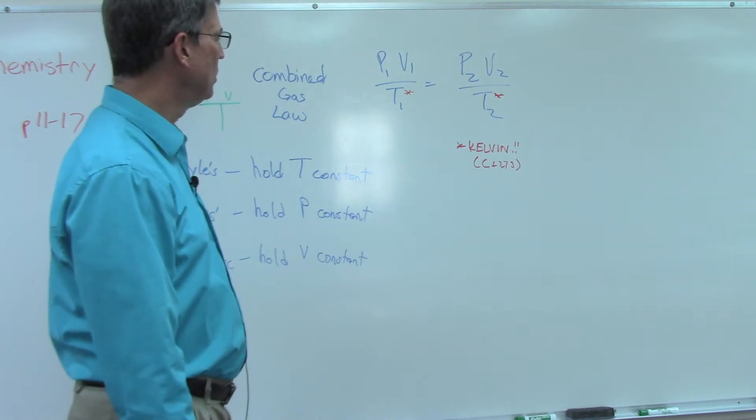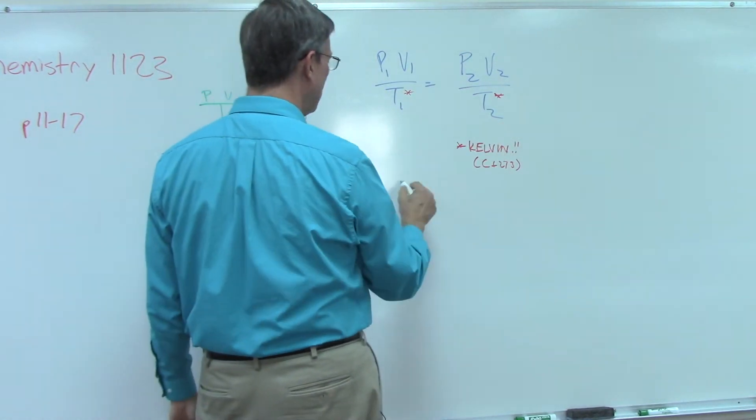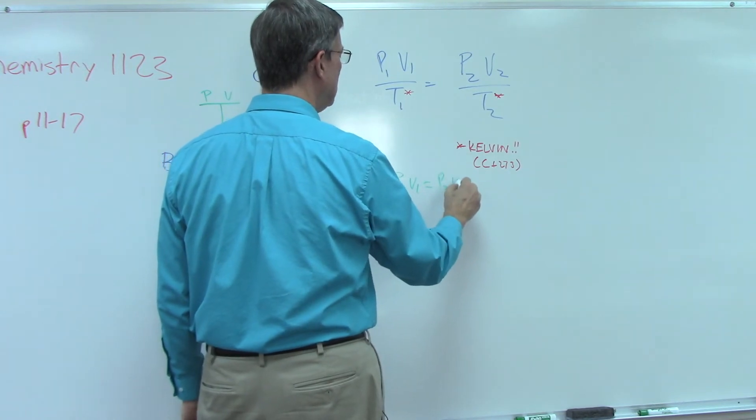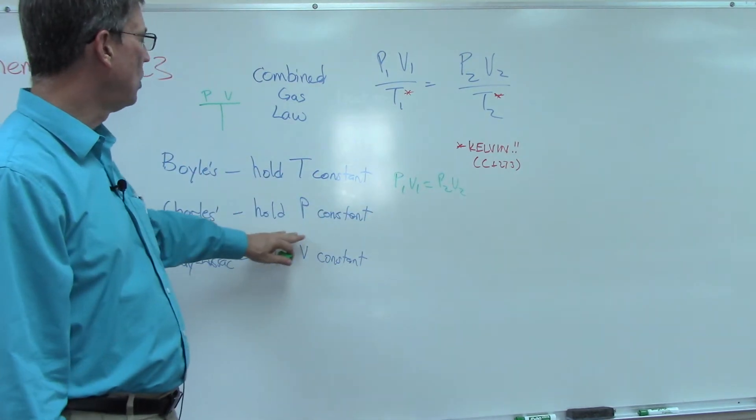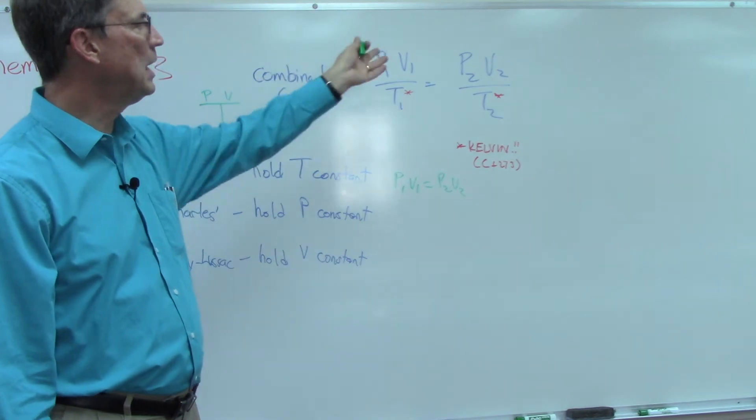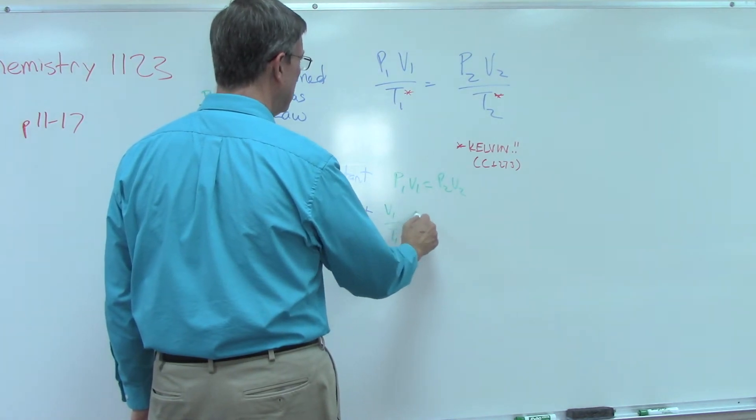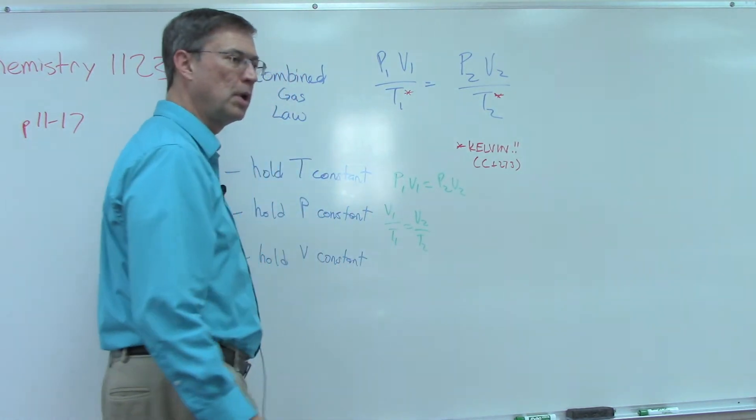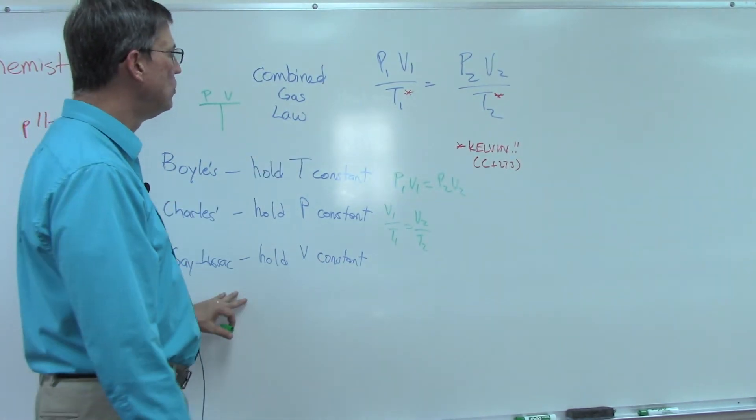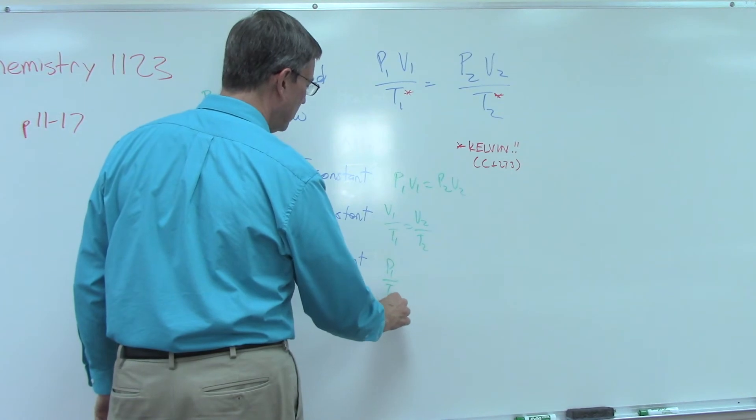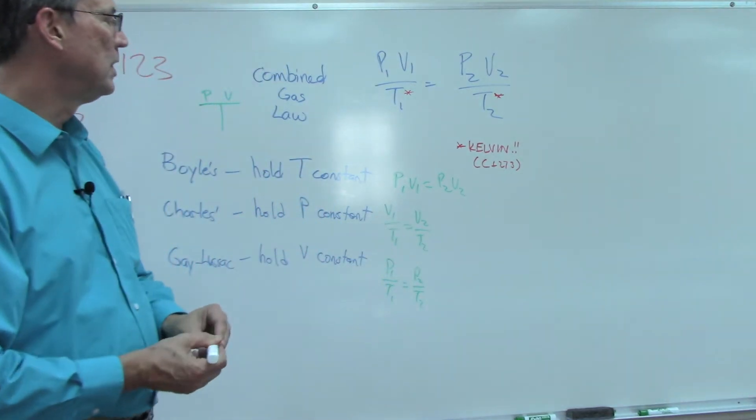If we're talking about Boyle's law, Boyle's law says we hold the temperature constant, so we take out the temperature. What would we be left with? P1V1 equals P2V2 - that is Boyle's law. For Charles law, we hold the P constant, so we take the P out. We would be left with V1 over T1 equals V2 over T2. Then you can just plug in the three numbers they give you and solve for the fourth - piece of cake. And then Gay-Lussac's law, we take out the volume, so P1 over T1 equals P2 over T2.